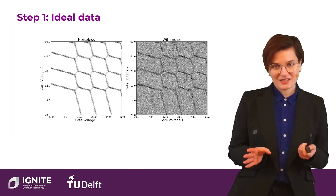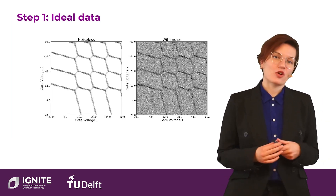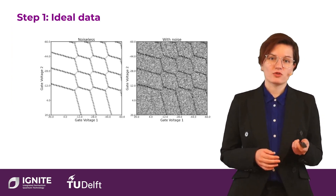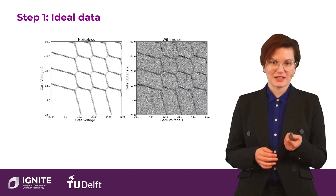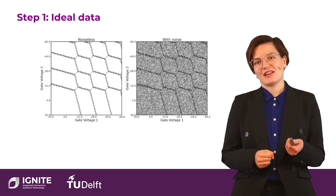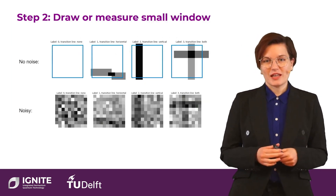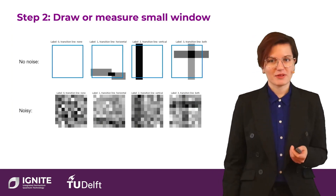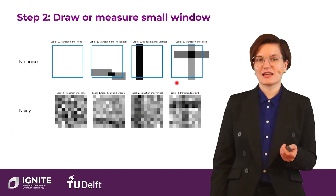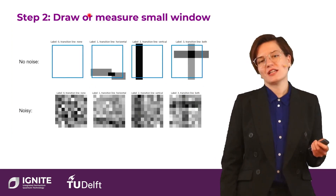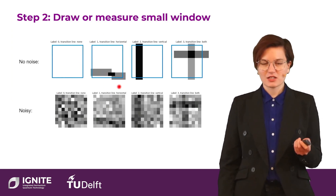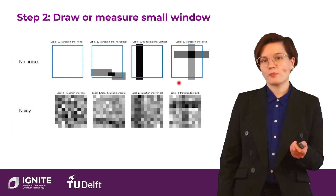This is theoretical simulated data from our package made together with students in my group. We have two examples of a charge stability diagram: one is the perfect noiseless one, and another is noisy. If I draw a small window from this charge stability diagram, I will see that four things can happen: either I draw a window that has no transition, a vertical transition, a horizontal transition, or both.